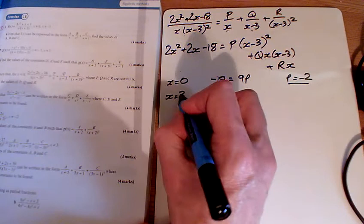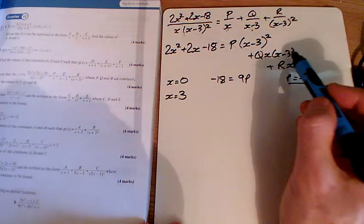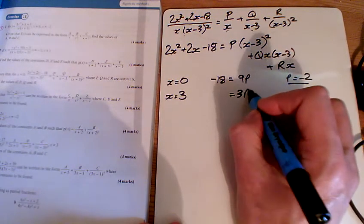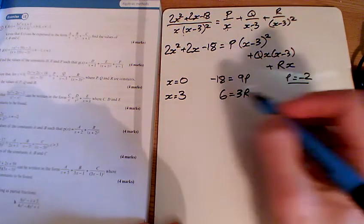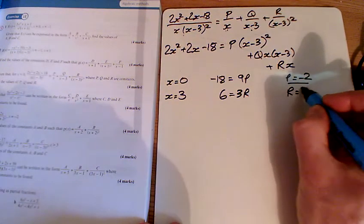When x is equal to 3, that one's 0, that one's 0, I've got 3 r's here, and put a 3 in all of that, I'm getting 6. And so r is equal to 2.